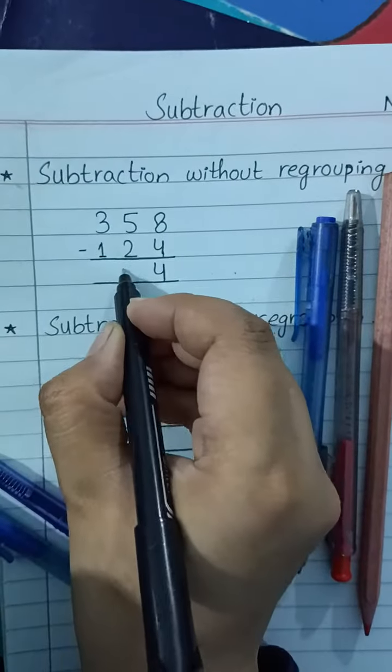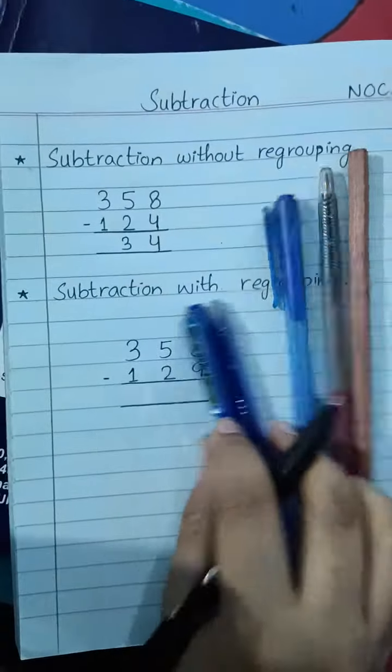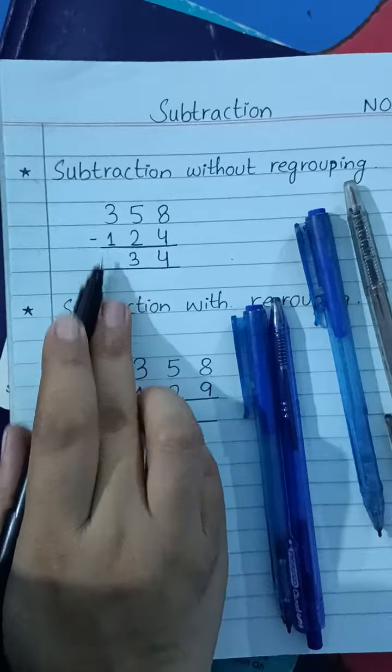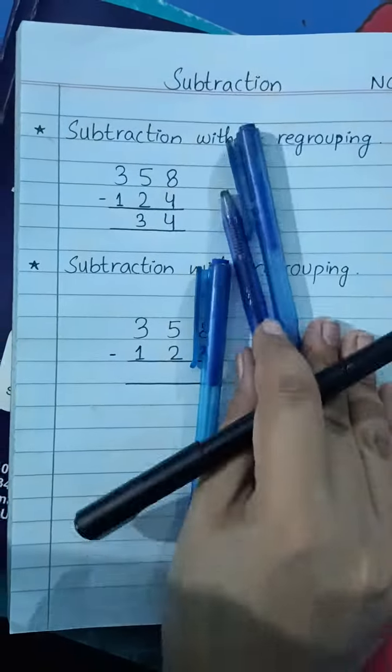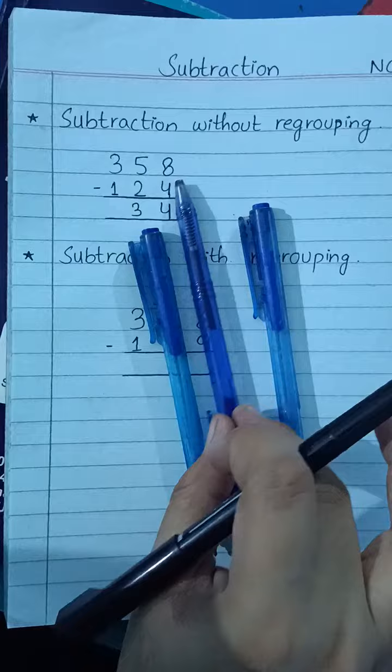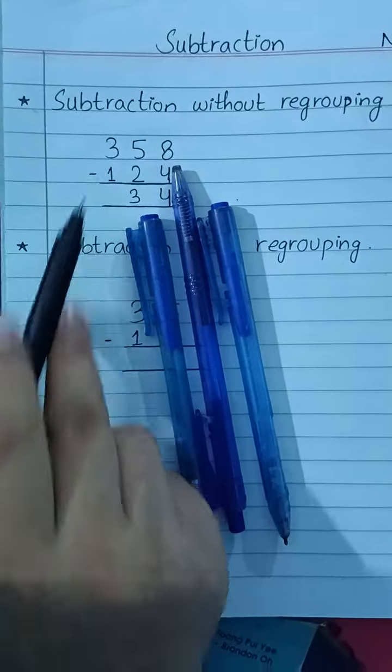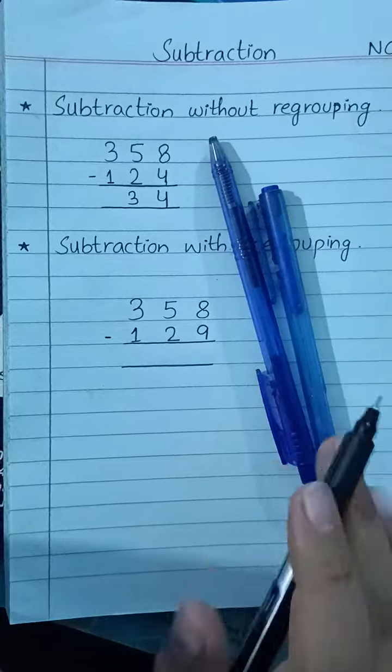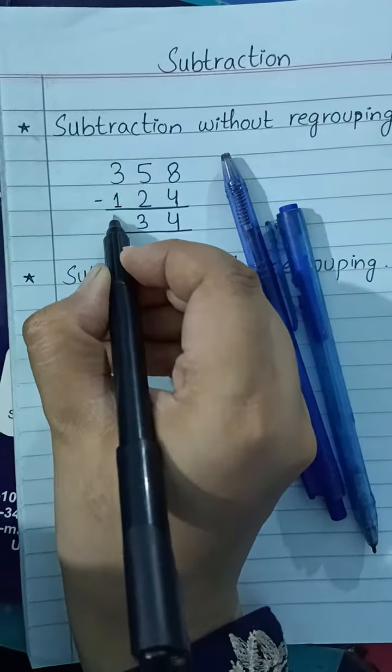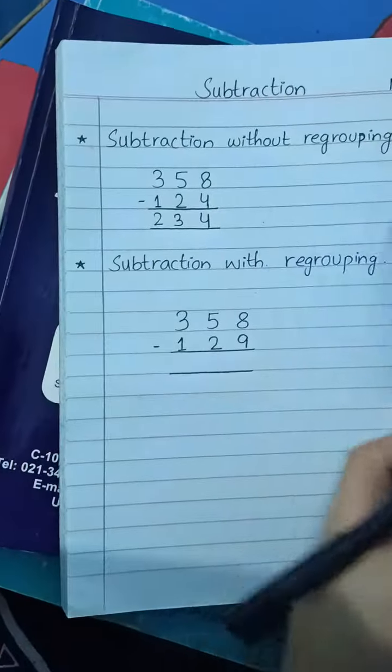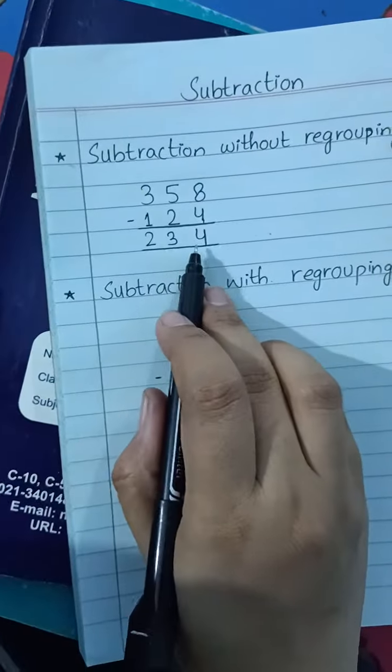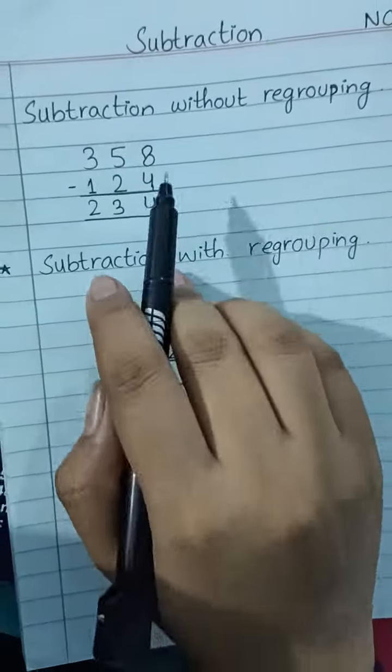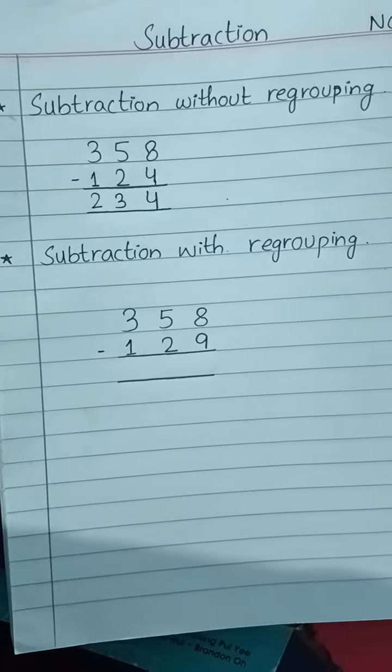Again we have 3. You have to subtract 1 from 3. Here you can see we have 3 pens: 1, 2, 3. We have to remove only 1, so we have left with 1, 2. Your answer is 234. This is called subtraction without regrouping or simple subtraction.